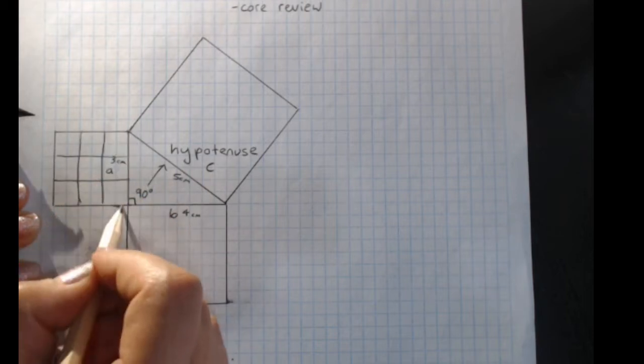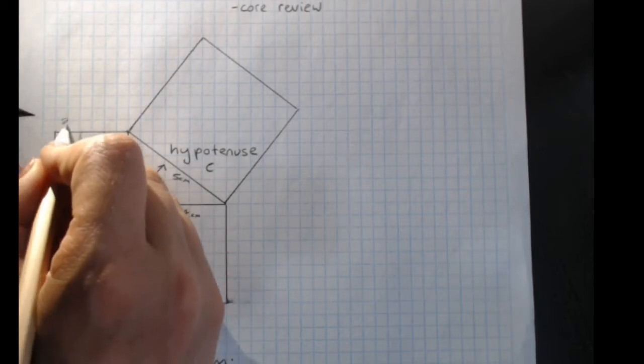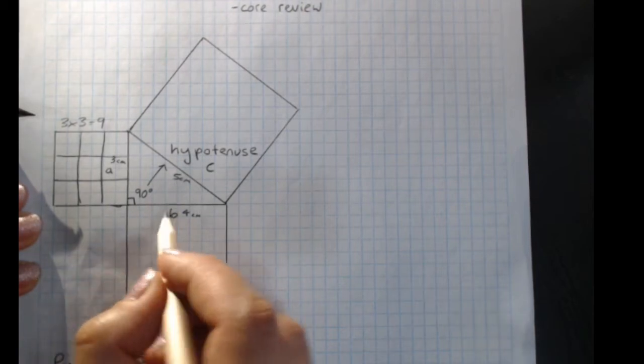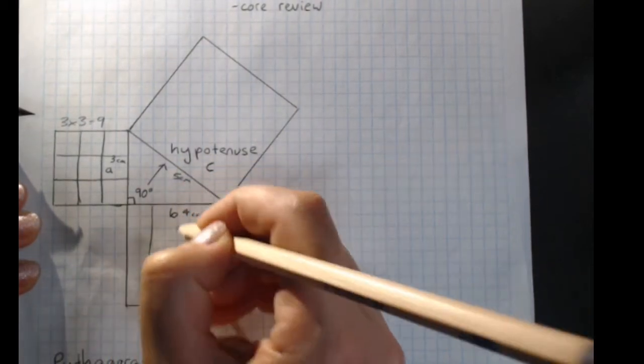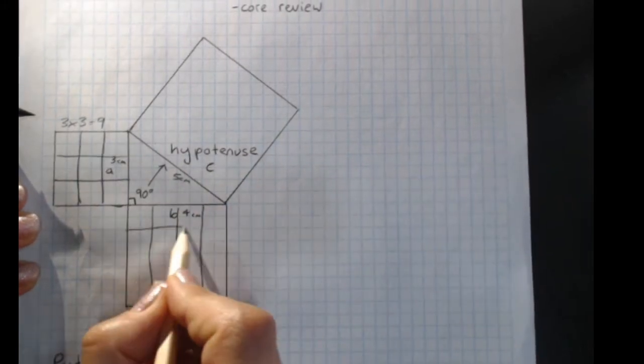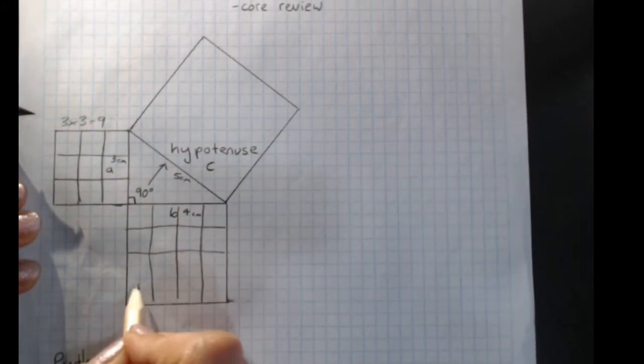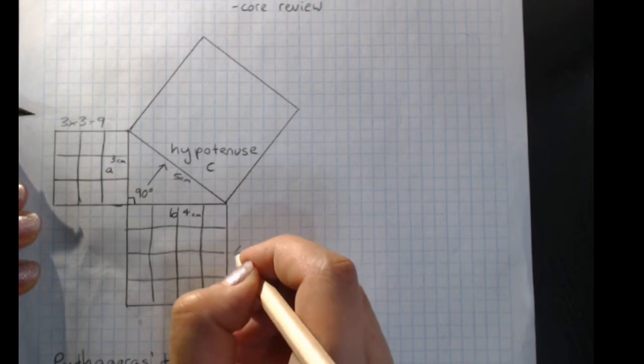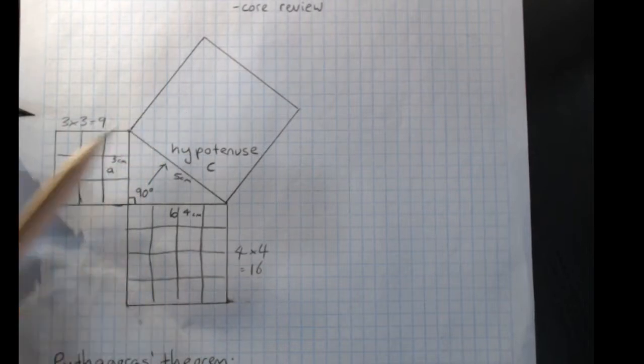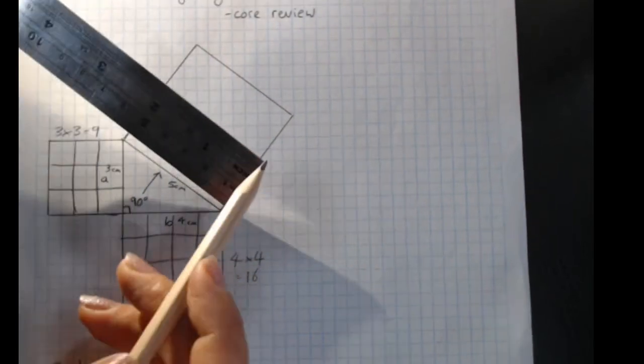And the area of a square is side times side, so this was three times three, which is nine squares. Side times side, and we can count by dividing it up into centimetres squared. Four times four, that's 16 squares.